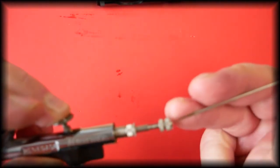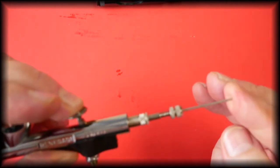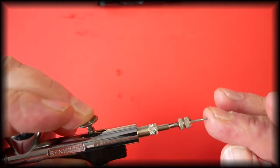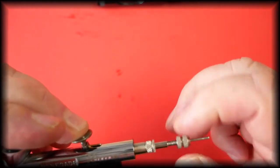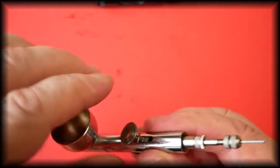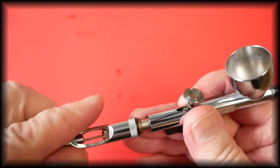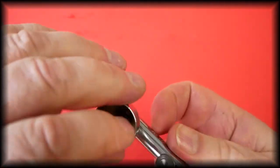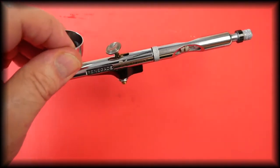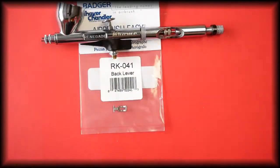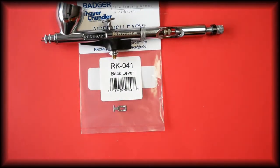Slide the needle in, and as always, no effort. Once it stops, that's as much pressure as needed. Lock it into place, refit the handle, and that is the back lever removed and refitted for the Badger Chrome airbrush.